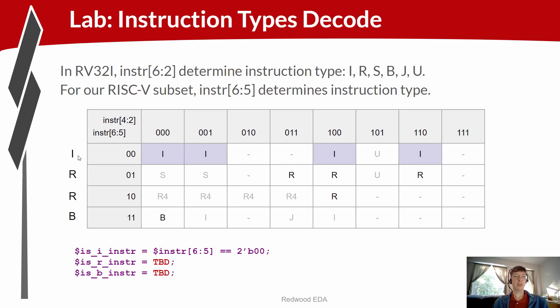So the first row here we can decode as an I type, and the next two rows as R type, and the next as B type.